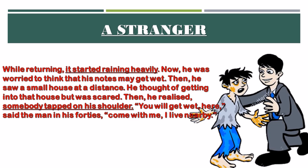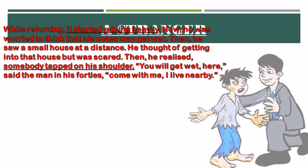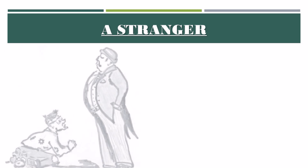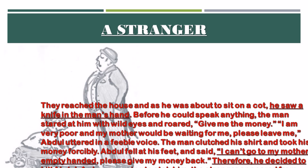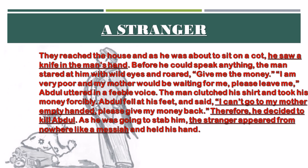'You will get wet here,' said the man in his forties. 'Come with me. I live nearby.' Dialogues are given to the characters, making the story more realistic. 'They reached the house and he was about to sit on a cot when he saw a knife in the man's hand.' Another conflict is used — the man who was supposed to help Abdul happened to be a robber. 'Before he could speak anything, the man stared at him with wild eyes and roared: Give me the money. I am very poor and my mother would be waiting for me. Please leave me,' Abdul uttered in a feeble voice.